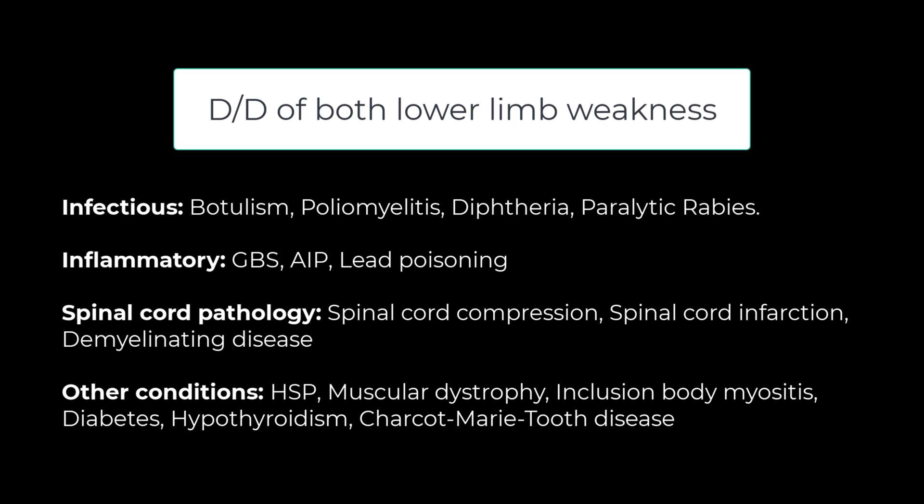Demyelinating disease like transverse myelitis or multiple sclerosis in the spinal cord can cause both lower limb weakness. The onset and speed of progression is very important — spinal cord infarction can cause lower limb weakness within minutes, whereas demyelinating diseases like multiple sclerosis or acute transverse myelitis would take at least a few hours to a few days. Other conditions like HSP — hereditary spastic paraparesis — can also be a cause, and here we would see spasticity with possibly a positive family history. Muscular dystrophy would probably not be present in this case because Duchenne and Becker's symptoms appear earlier.